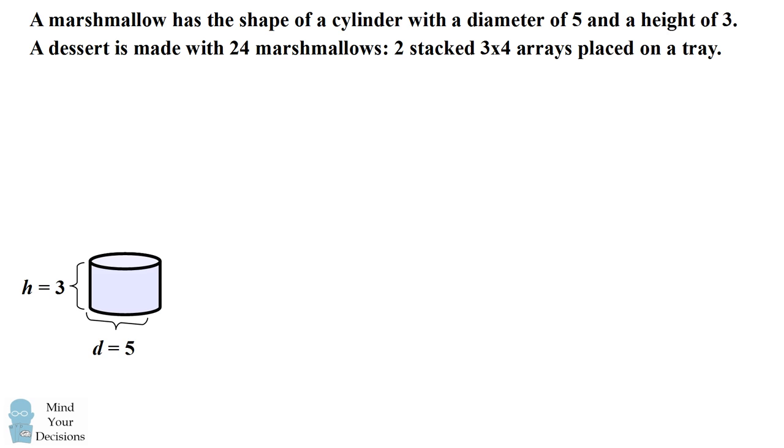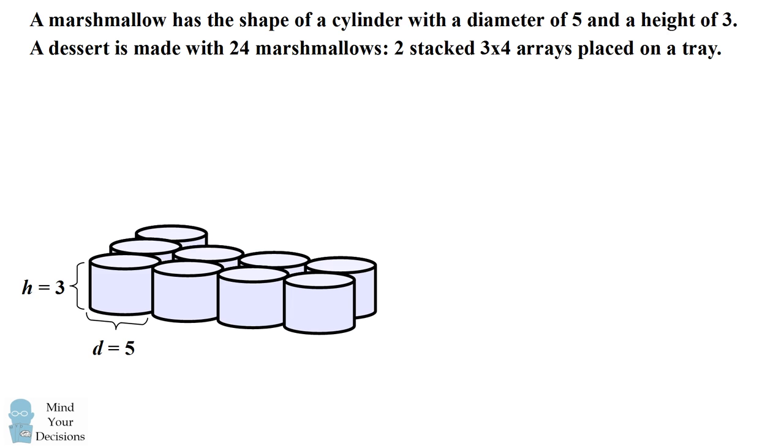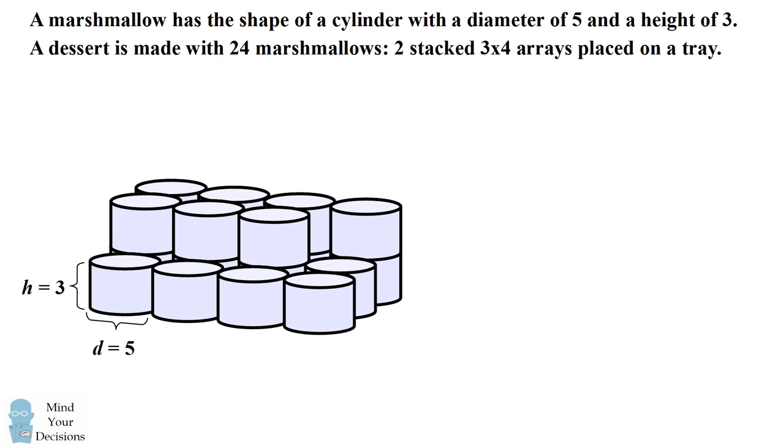A dessert is made with 24 marshmallows. The bottom layer consists of three rows of four marshmallows, and the top layer consists of exactly the same arrangement placed on top of the bottom layer.